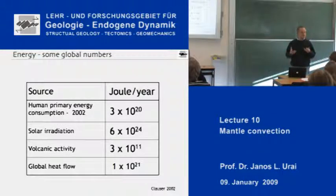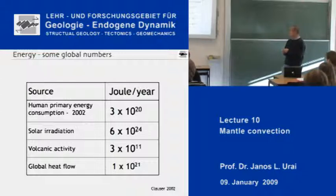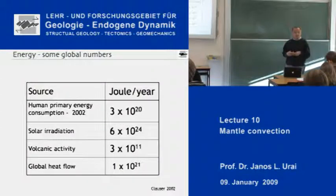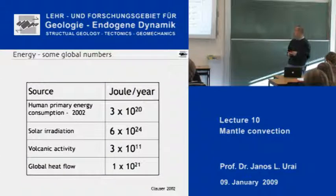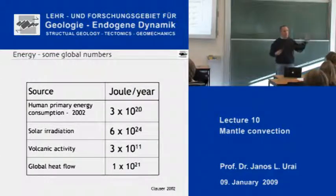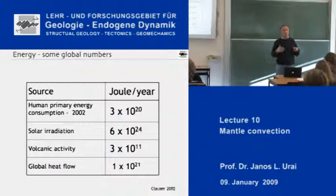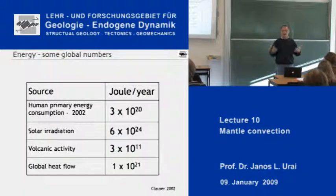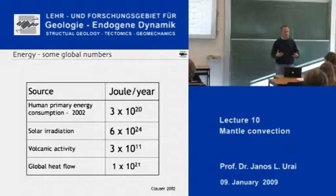Volcanic activity brings a lot of heat out of the Earth, but it is still much smaller than even primary energy consumption. Volcanic activity is certainly not the only way that heat comes out of the Earth. If you look at global heat flow, it is about 10 to the 21st joules in a year — much less than the sun irradiates us from the outside. But this heat flow, due to the fact that the Earth is warm on the inside and cold on the outside, is basically the most visible sign of this big heat engine below the surface.